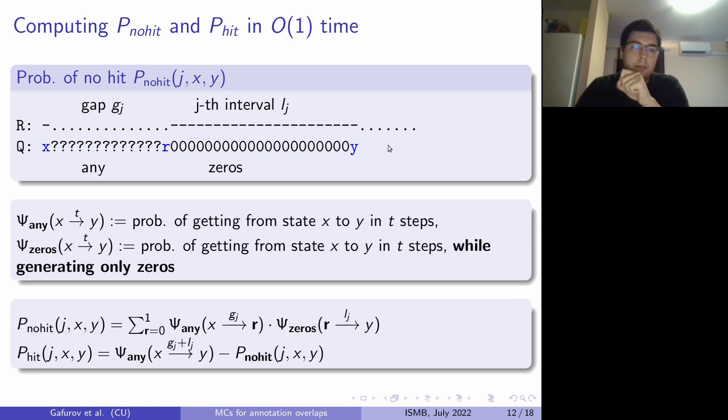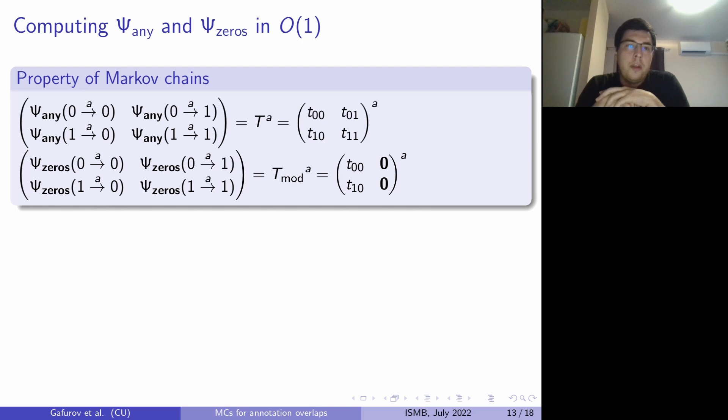And if we define psi_any as probability of getting from one state to another state while generating whatever we want, and psi_zeros as probability of getting from one state to another in a certain amount of steps but generating only zeros, then we are able to write down our probability of not hitting the interval as a product of those two values. So our task now is to compute those psi_any, those probabilities of generating exactly T states starting from X going to Y in constant time. And using the property of Markov chains, it can be seen that probability of generating anything going from state X to state Y in T steps can be computed just as an exponentiation of the transition probability matrix of that Markov chain.